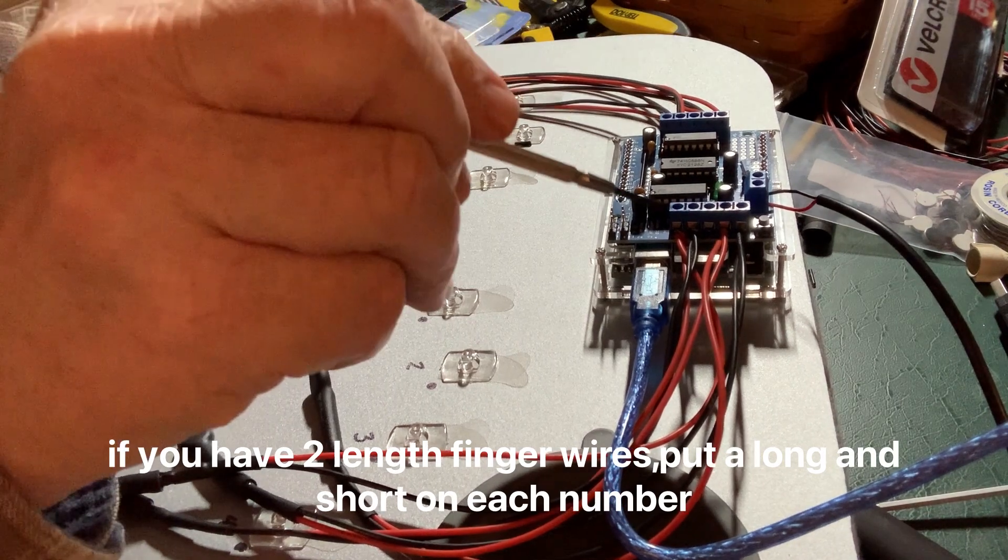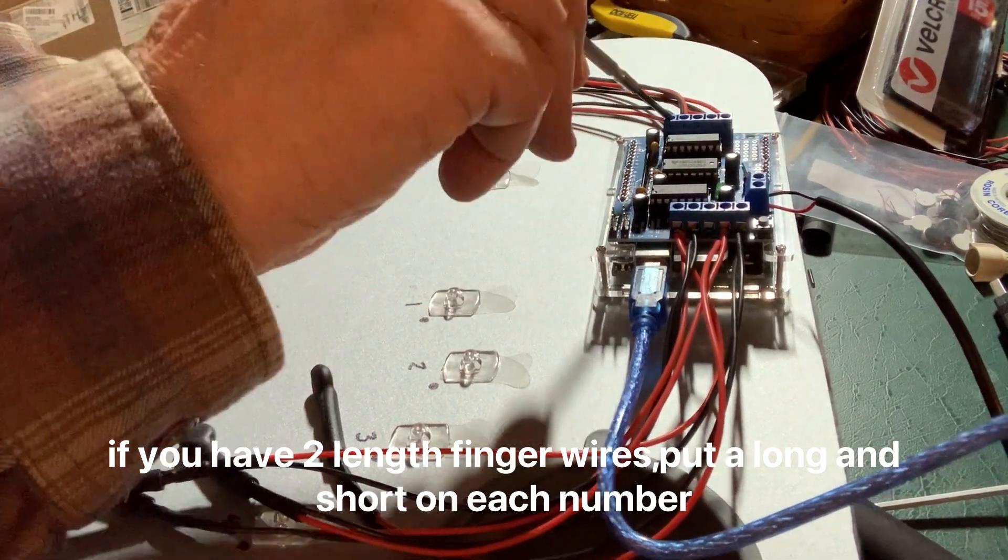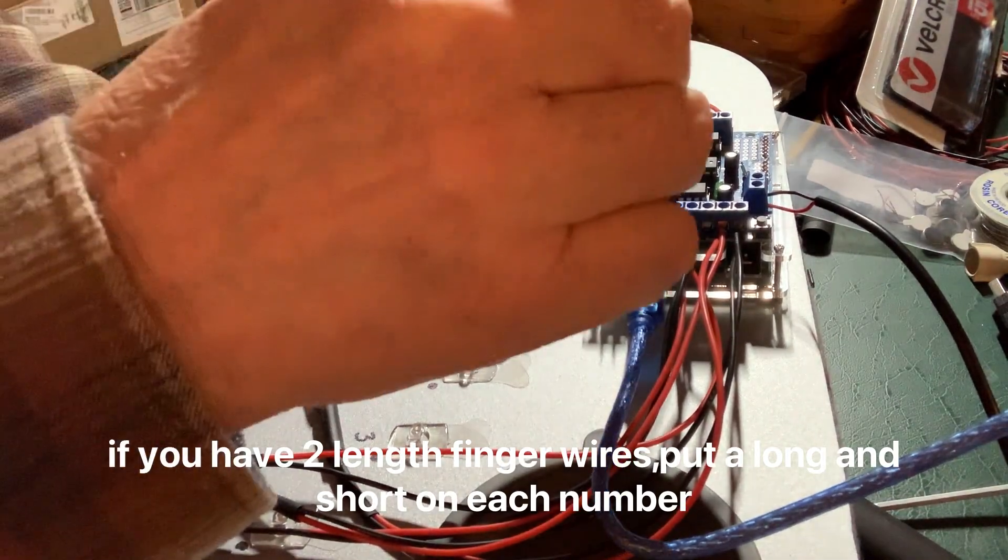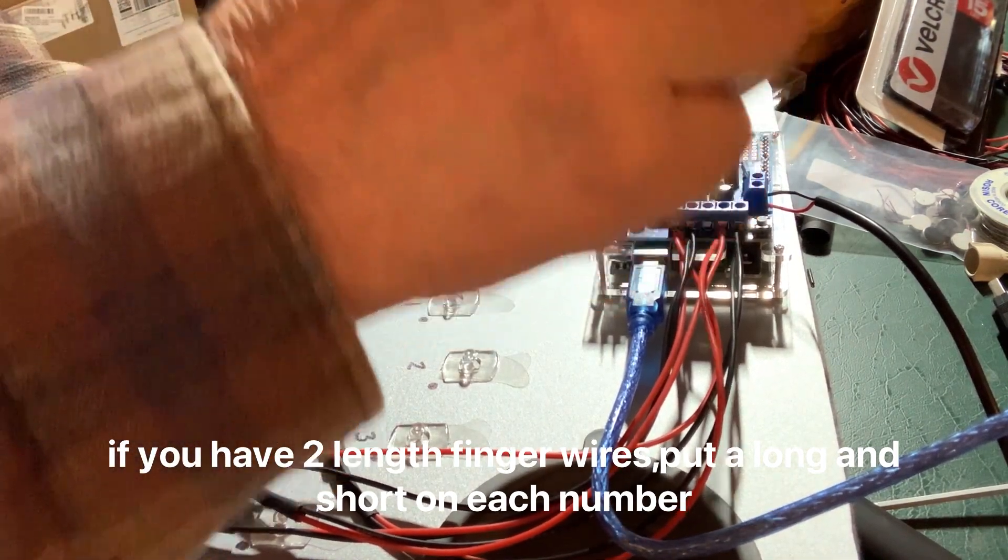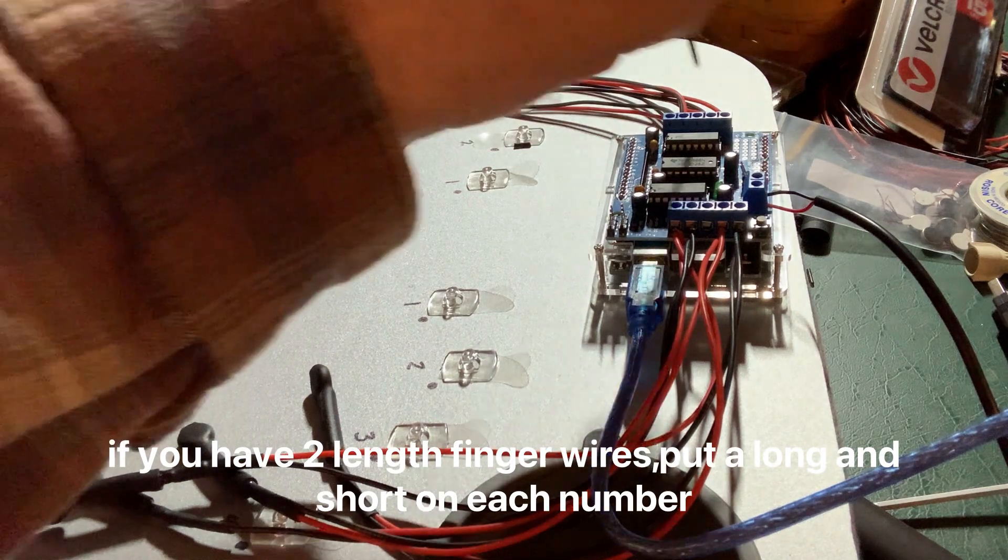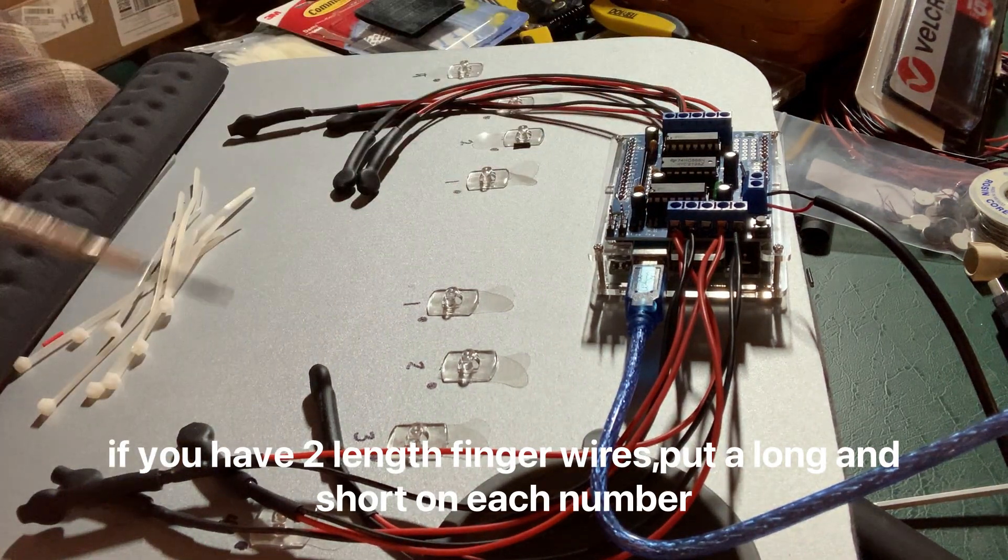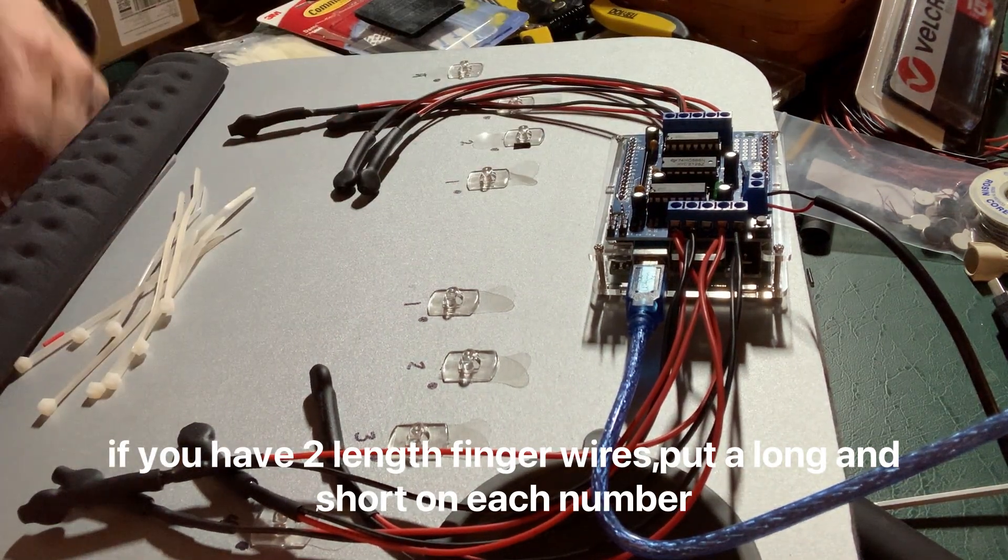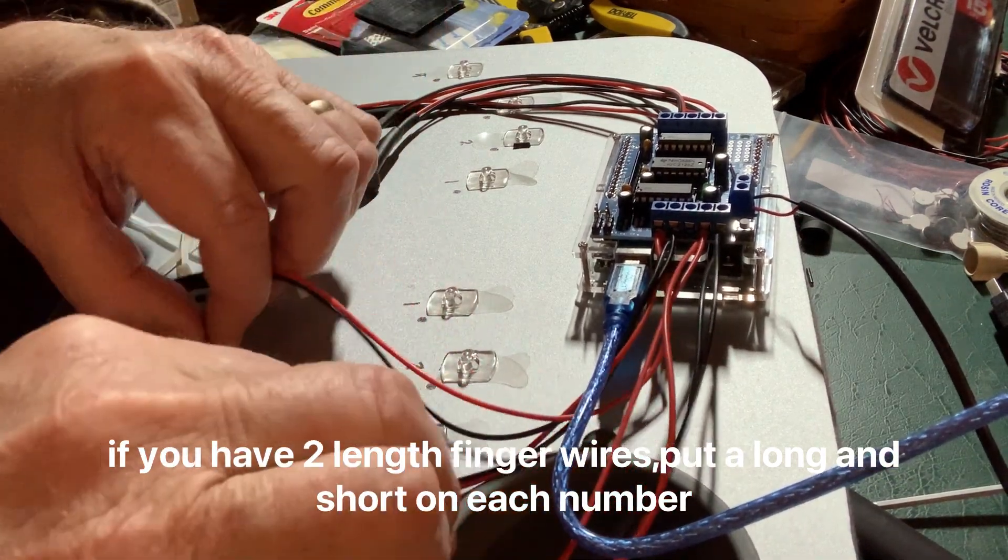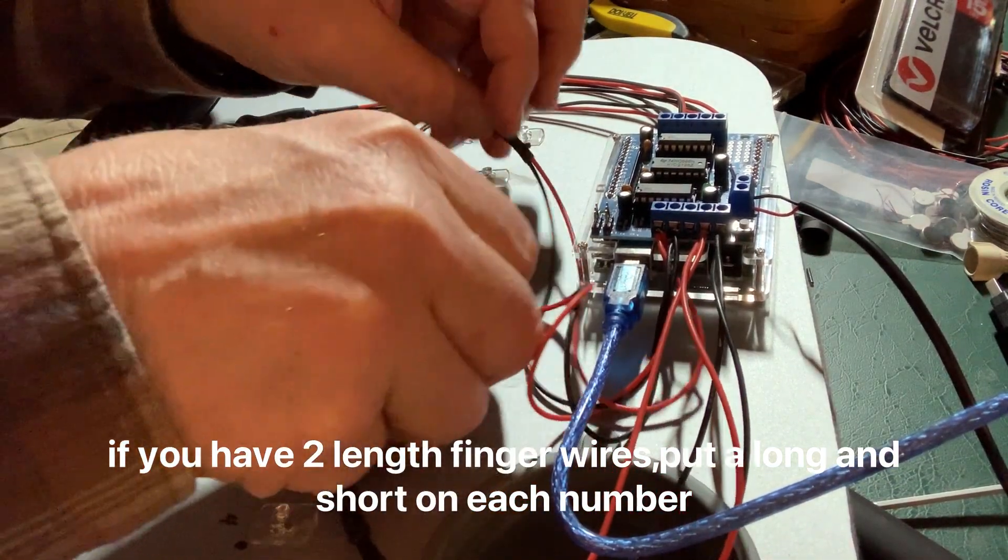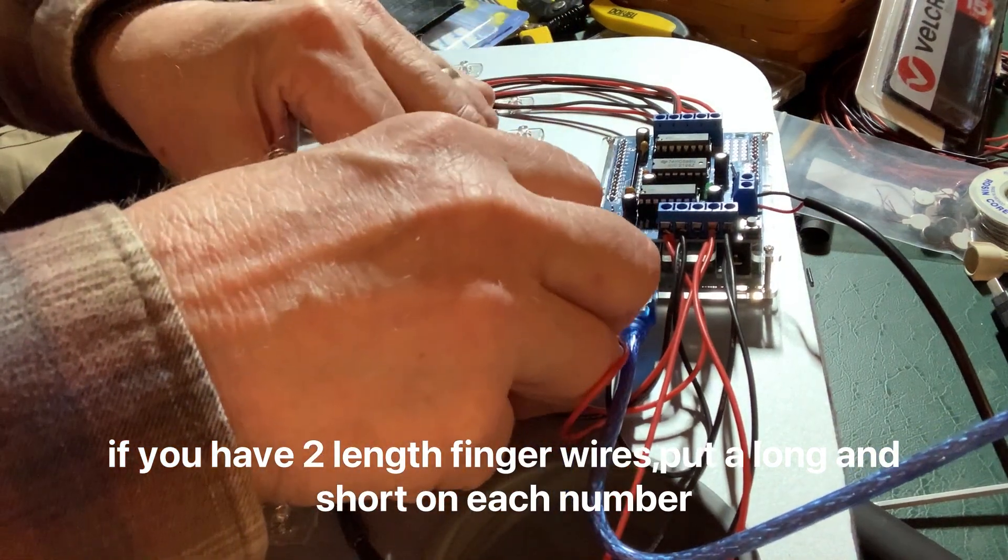So I've connected to all of my terminal blocks. So I have two motors to one, two motors to two, two to three and two to four. Now I'm going to distribute those across. So I'm going to take both of my connections to one. And I'm going to put one on left hand, one on right hand.